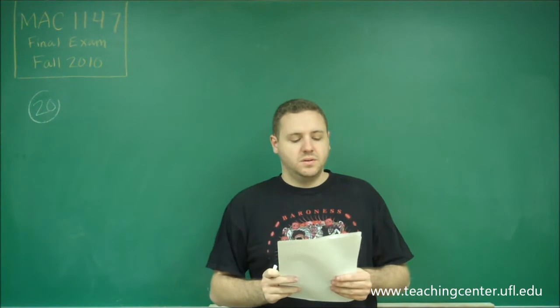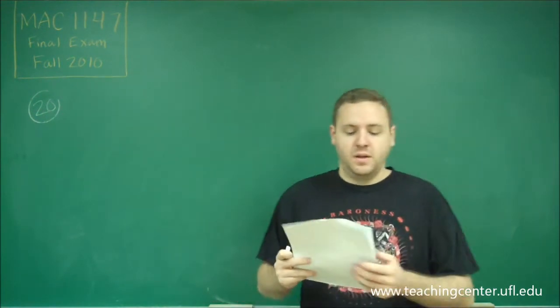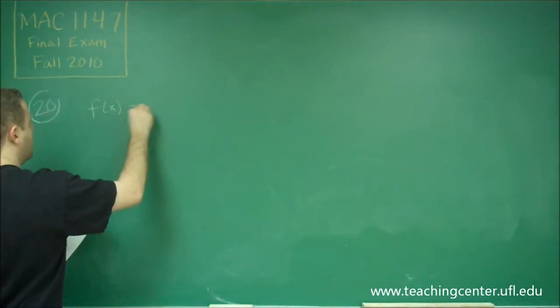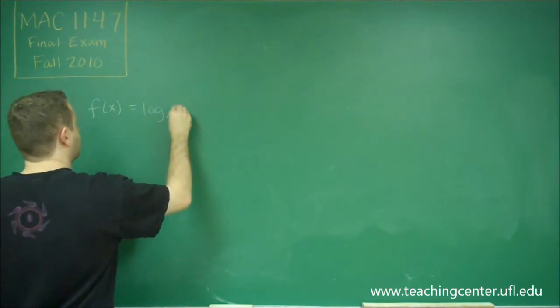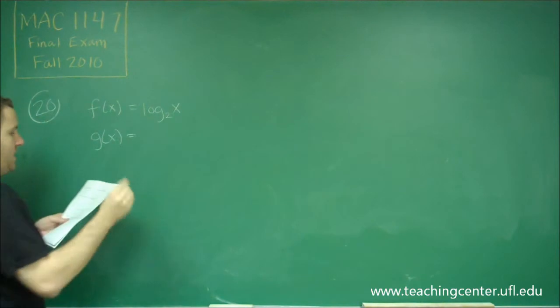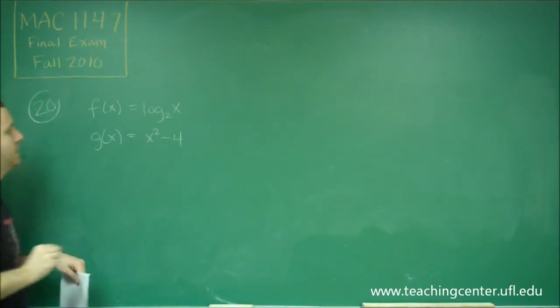All right, so problem 20 is asking us about function composition and finding the domain. We have two functions: f(x) is log base 2 of x, and g(x) is x squared minus 4.